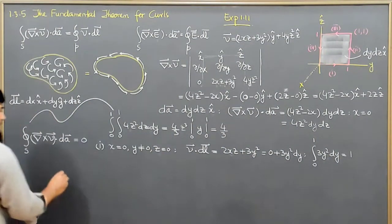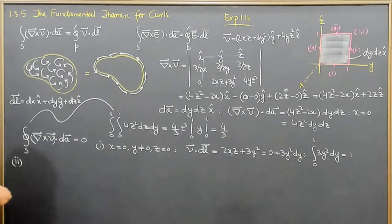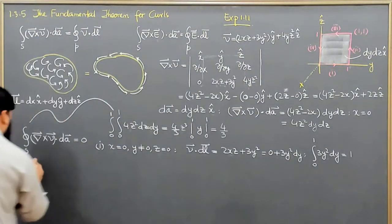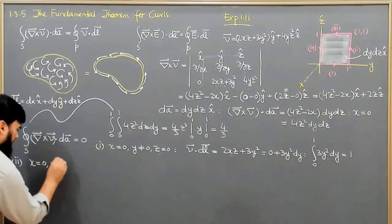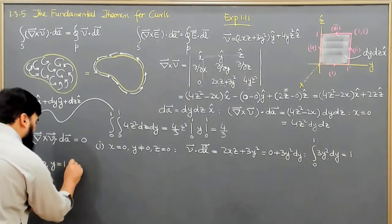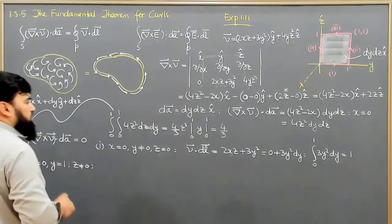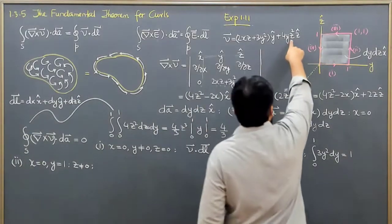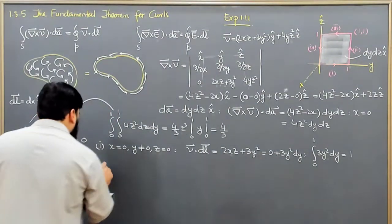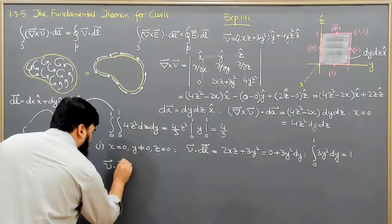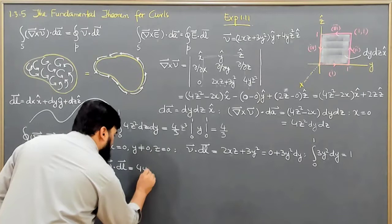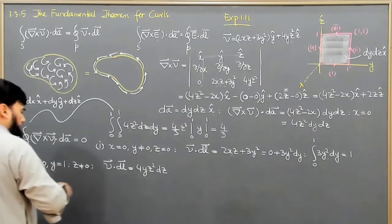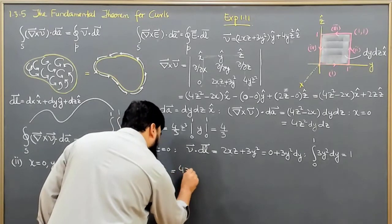On path 2, y is equal to 1 while x is equal to 0, and the variation is only occurring along z, which is non-zero. So only the dz component remains and the x and y components are 0. Therefore v dot dl comes out to be 4yz squared dz, and since y equals 1, this simplifies to 4z squared dz.